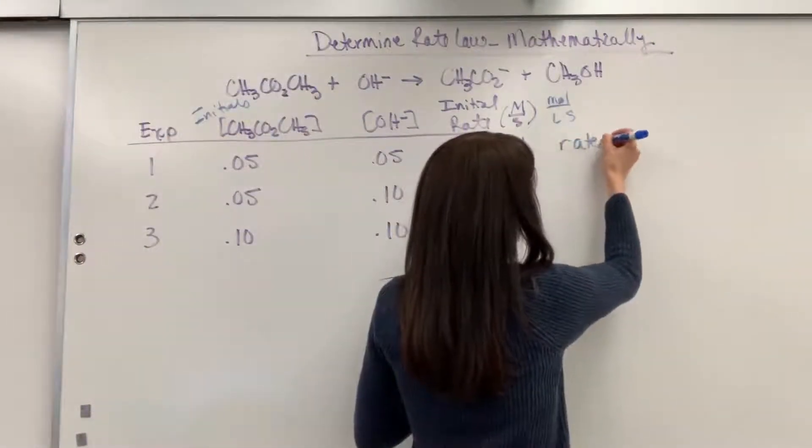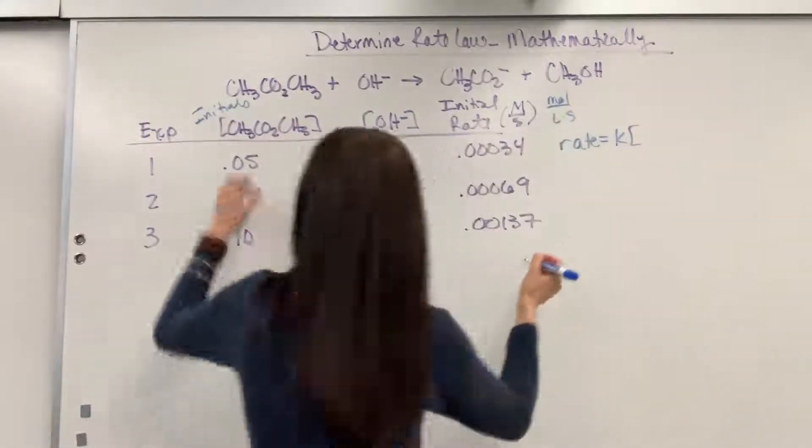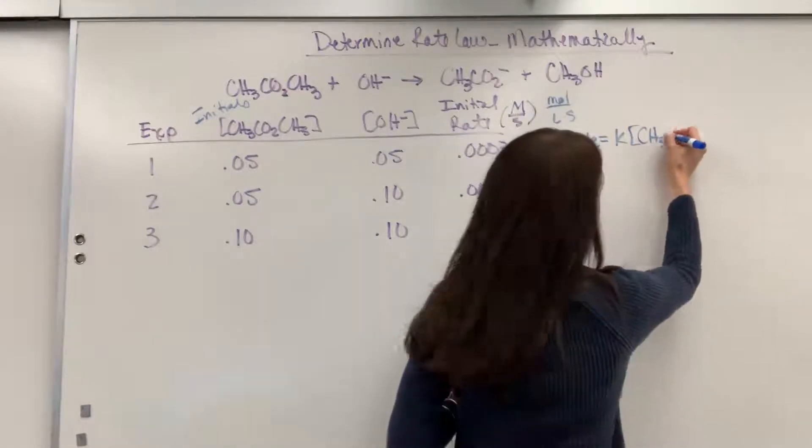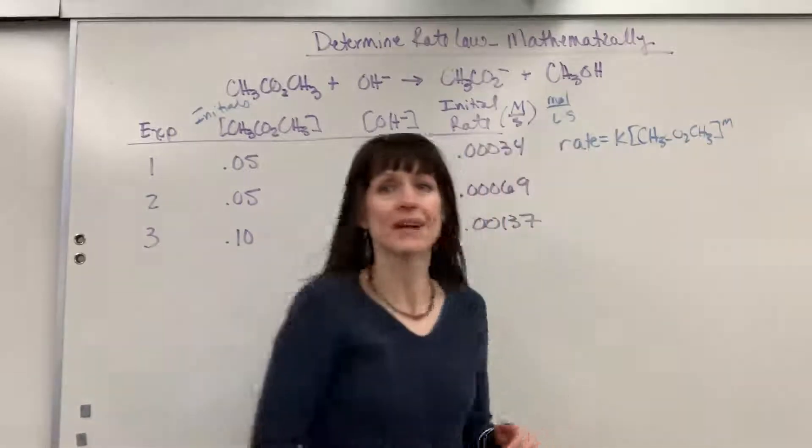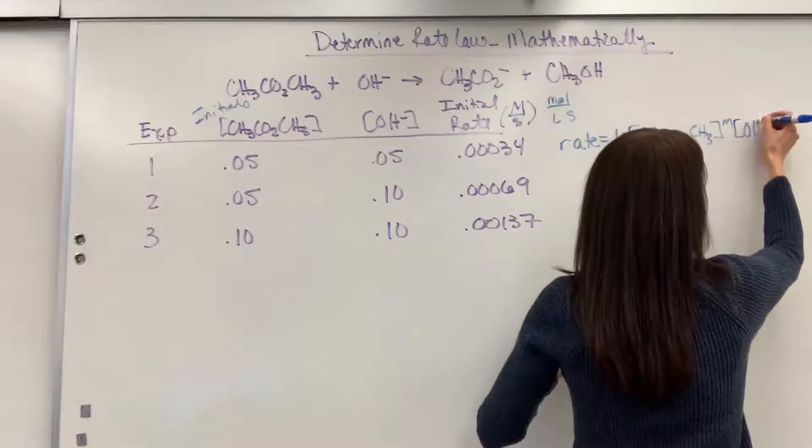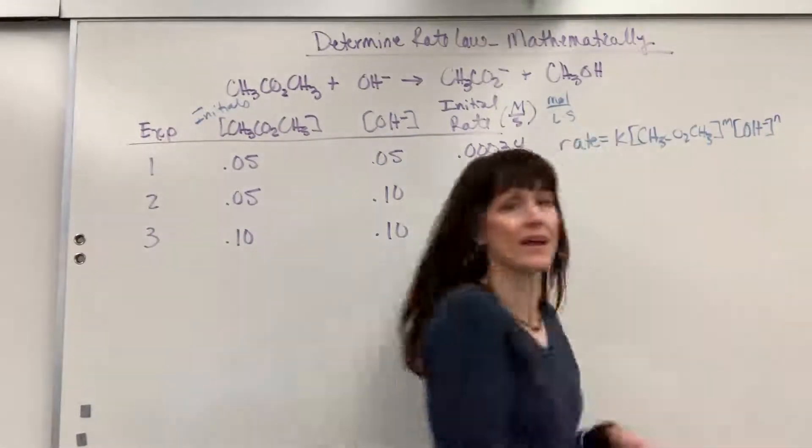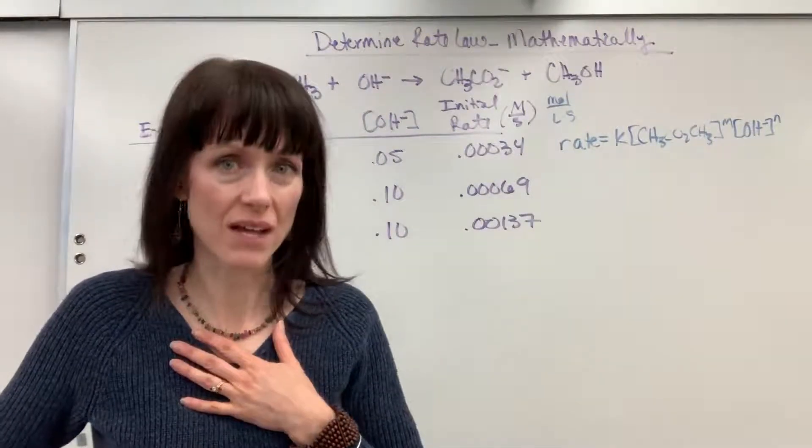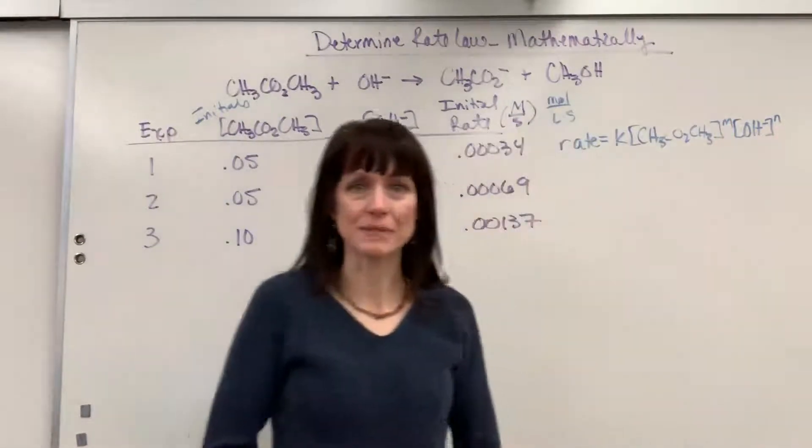we're going to have concentration of the methyl acetate, CH3, raised to some order, and we're going to call that M, times the concentration of the other reactant, which is hydroxide, raised to the order of N. So really, I only have, at this point, to write the rate law, I've got two unknowns. I need to figure out those orders, the M and the N.